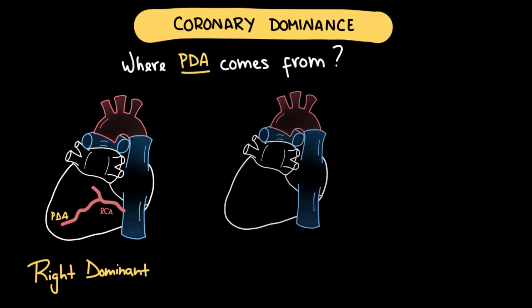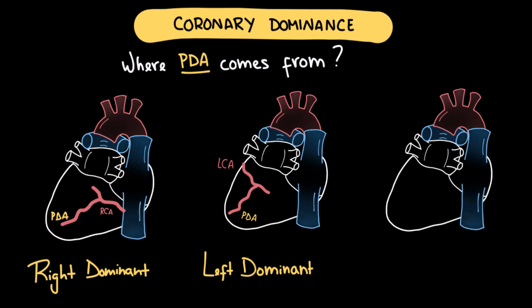But in around 5-10% of people, the PDA arises from the left coronary artery, more specifically from the circumflex artery. So we call this a left dominant heart. And about 10-20% of people, the PDA arises from both, meaning it arises from the right and the left coronary arteries. In these cases, we say it's a co-dominant heart.